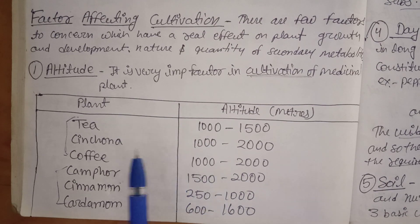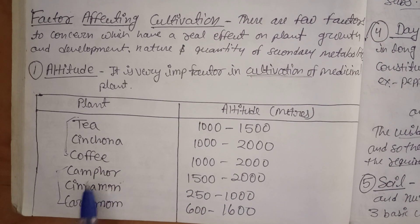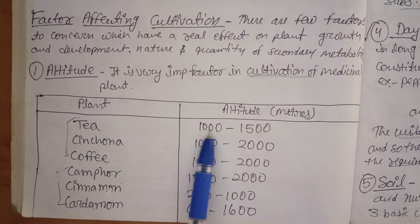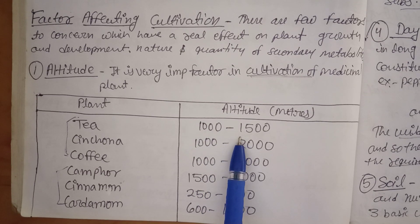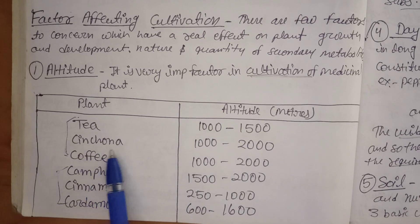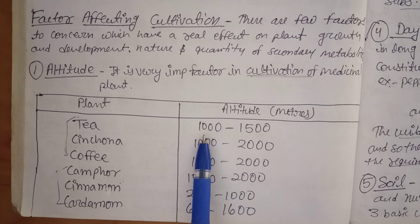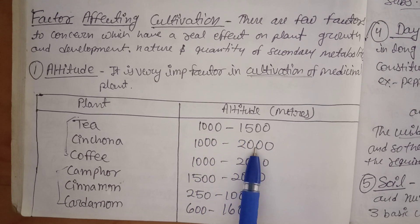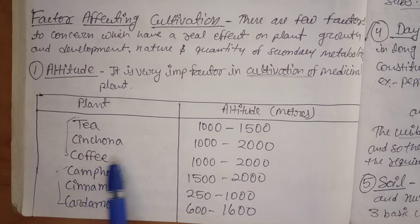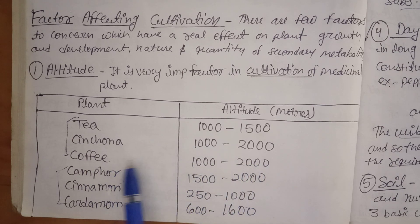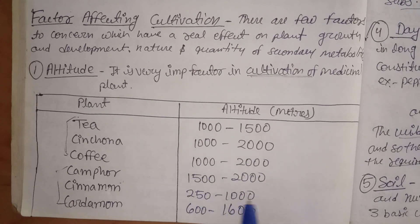These drugs have been arranged to be easy to remember from an altitude point of view: tea, cinchona, coffee, camphor, cinnamon, cardamom — triple C. Tea grows at 1000 to 1500 meters, in hilly regions like Assam, Darjeeling, and Sikkim. Cinchona is 1000 to 2000 meters — same minimum as tea, maximum increased by 500. Coffee is also 1000 to 2000 meters — same as cinchona. Both cinchona and coffee start with C and share the same altitude range.